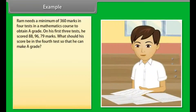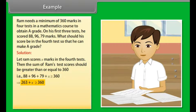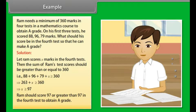Example: Ram needs a minimum of 360 marks in 4 tests in a mathematics course to obtain an A grade. On his first 3 tests, he scored 88, 96, and 79 marks. What should his score be in the 4th test? Solution: Let Ram score x marks in the 4th test. Then 88 plus 96 plus 79 plus x must be greater than or equal to 360, which implies 263 plus x ≥ 360, so x ≥ 97. Ram should score 97 or greater in the 4th test to obtain an A grade.